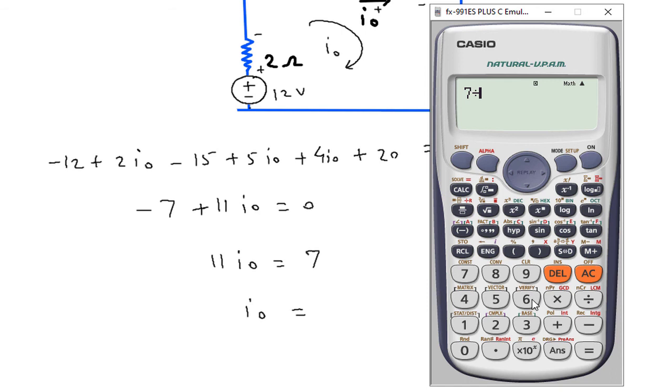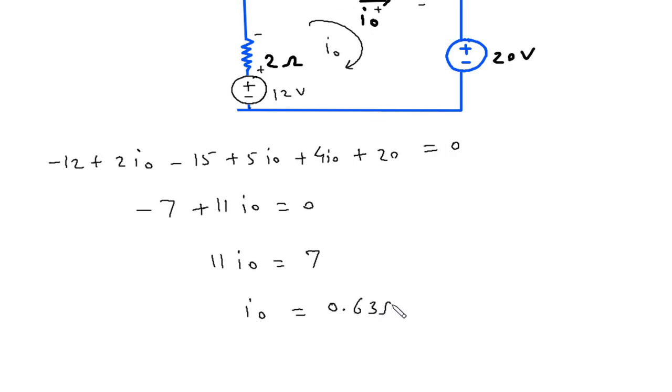So, 7 by 11 is 0.63, 0.63 ampere. What we have to find?